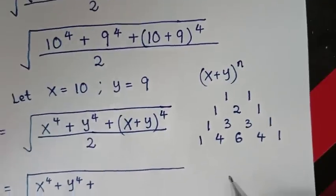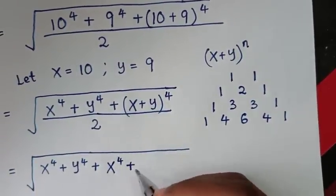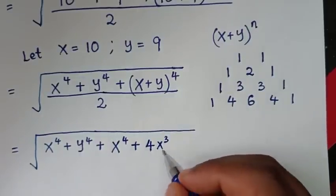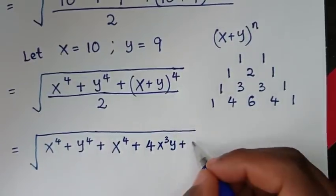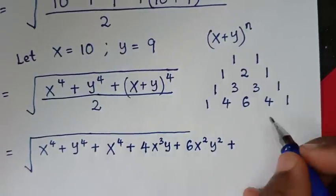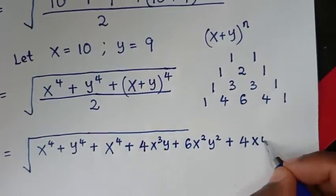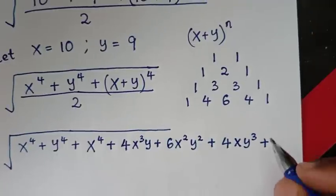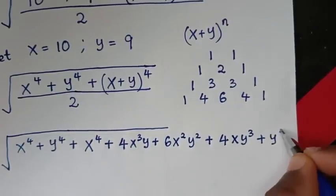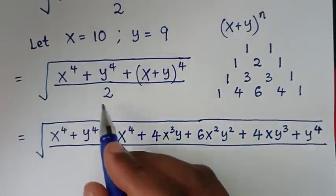So for n=4, using these coefficients: coefficient 1 gives x⁴; coefficient 4 gives 4x³y; coefficient 6 gives 6x²y²; coefficient 4 gives 4xy³; and coefficient 1 gives y⁴. This expansion is then over 2.